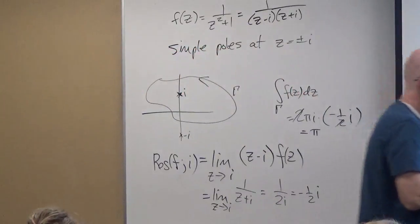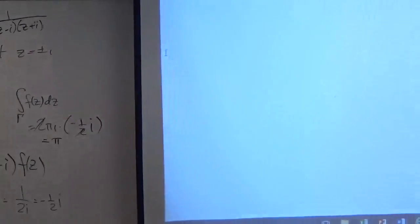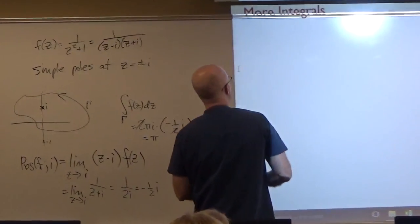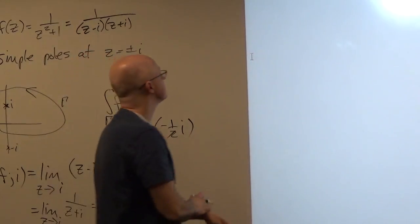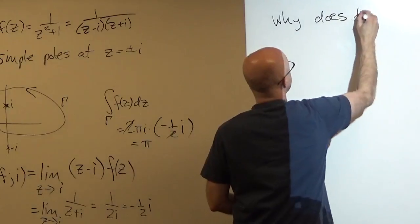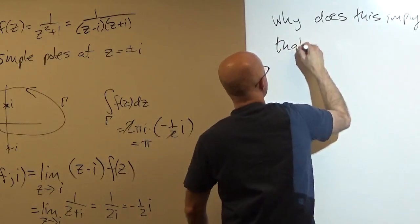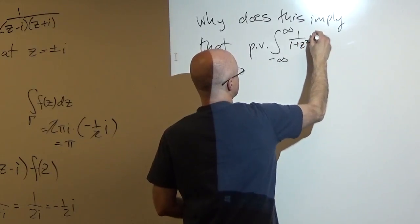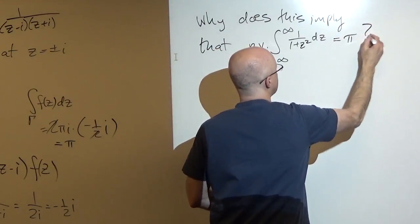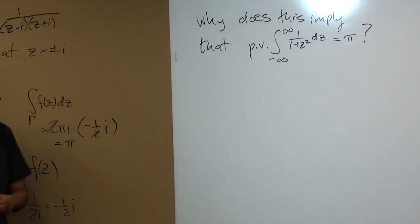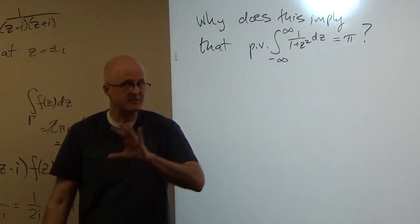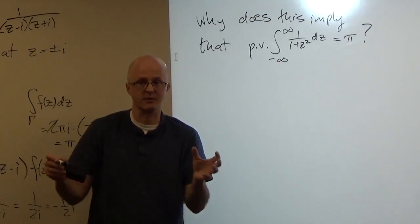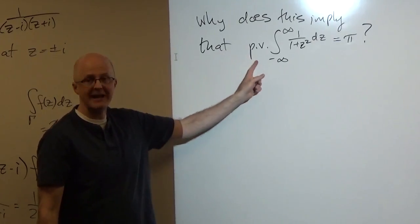But how do you go back and prove that this implies the principal value of the improper integral from minus infinity to infinity also equals π? We did see why the ordinary improper integral — as a sum of two convergent improper integrals from zero to infinity and from minus infinity to zero — converges to π. But the principal value is actually a different idea.